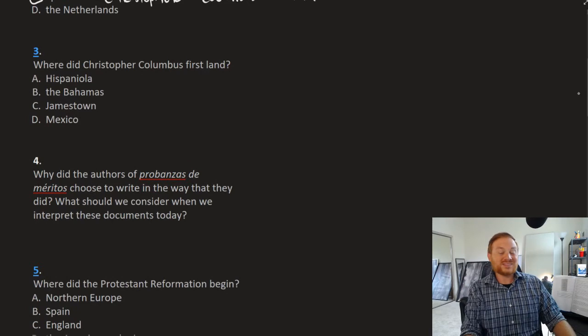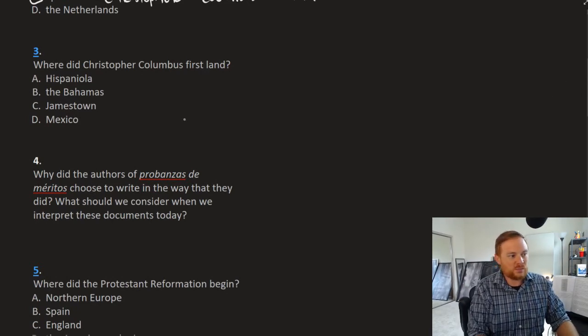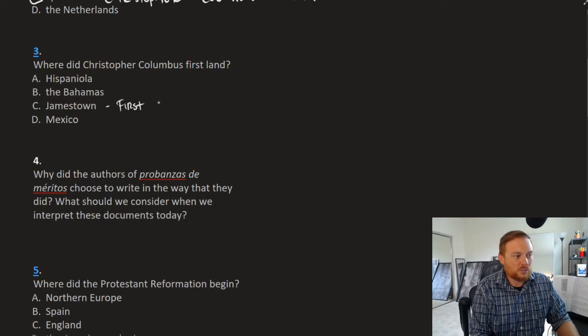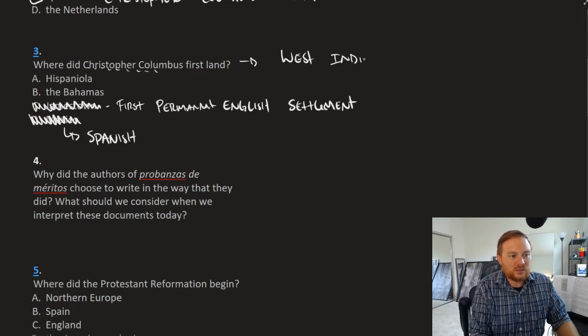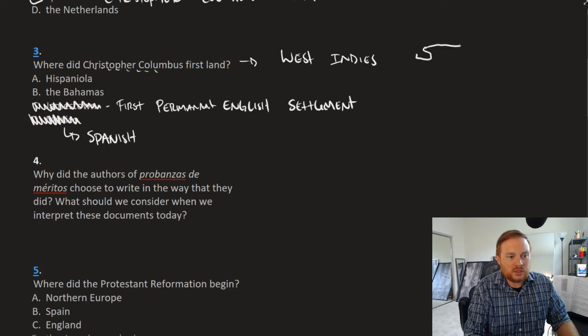Question number three, where did Christopher Columbus land? This is a little bit tricky, but we should be able to eliminate some answers. Jamestown, this is the first permanent English settlement, so the fact that this is English should already allow us to eliminate it. Mexico did become a Spanish possession, but it was not the first area where Columbus arrived. Columbus landed in what we call the West Indies. If you're looking at a map, there's Louisiana, there is Florida, Mexico looks something like this. The Bahamas and the West Indies are these islands kind of in this area.